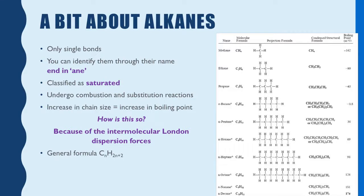A bit about alkanes. We already know that they have single bonds, and just to double check — look at all these structural formulas: there are only single bonds between carbon and carbon. No double bonds, no triple bonds, just single bonds. We can also identify alkanes through the ending of their names. Alkanes always end in "-ane". If we have a look: methane, ethane, propane — they all have that "-ane" in common.